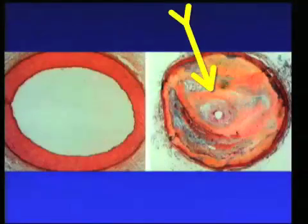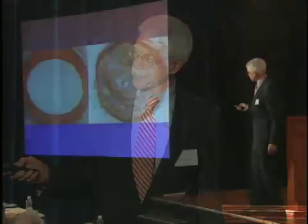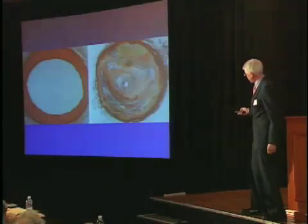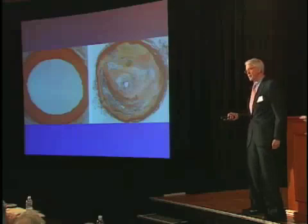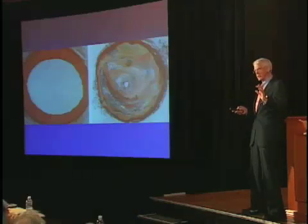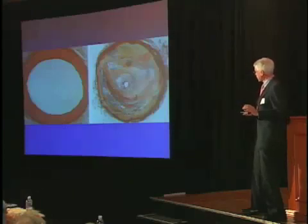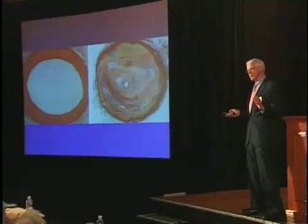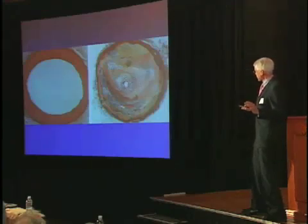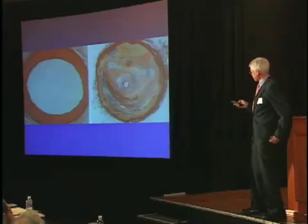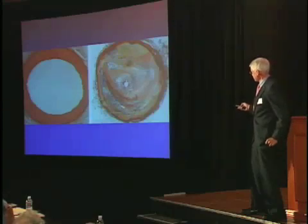Interestingly enough, this is not what usually causes heart attacks. Maybe 10 percent of heart attacks will occur this way, because when this finally blocks off, very often you will have these little tiny threads called collaterals that develop around the outside of this artery. They feed that downstream portion of heart muscle which is being deprived, so that when this blocks off there's enough blood going through those collaterals to keep you from having a heart attack. But let's say that 10 percent of heart attacks are caused this way.